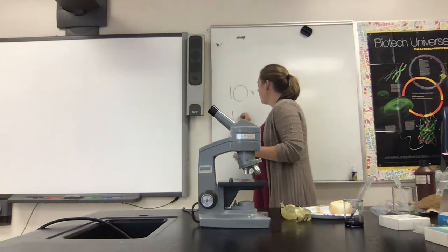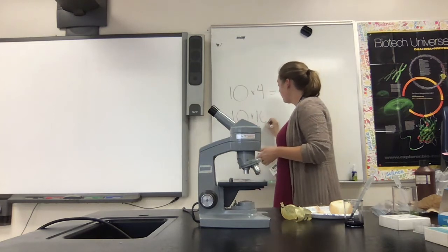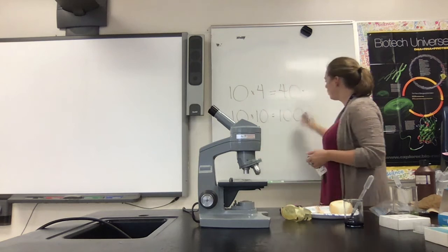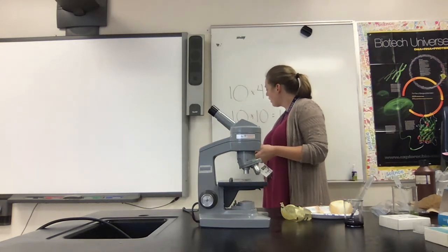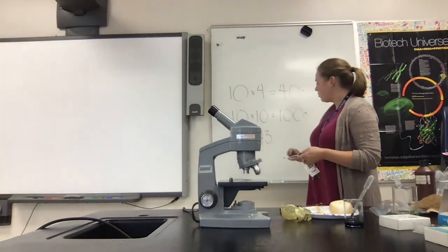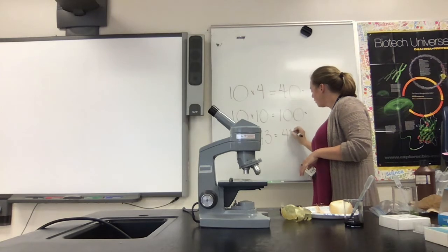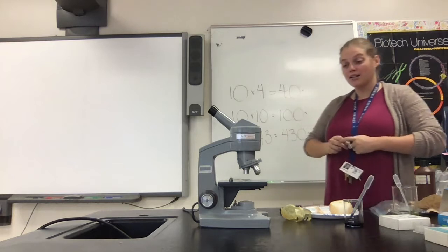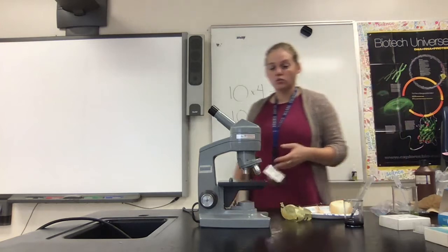If we have an eyepiece with a power of 10 and our objective has a power of 10 also, then we would have a total magnification of 100 — something would be 100 times larger than it normally is. And if we use an objective that has 43 times magnification, we would have a total power of 430. So our maximum power of magnification is going to magnify something to be 430 times larger than it normally is.